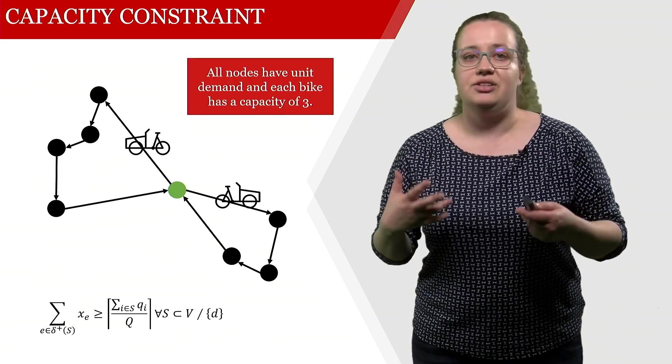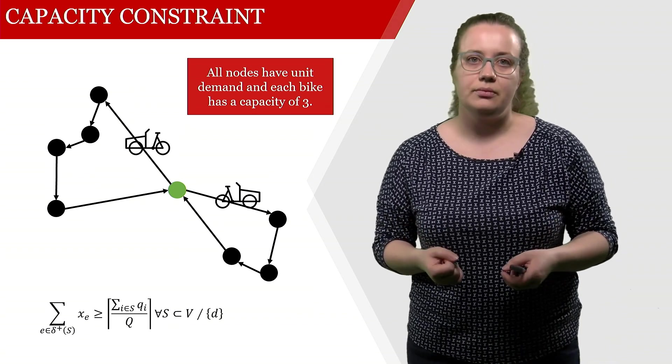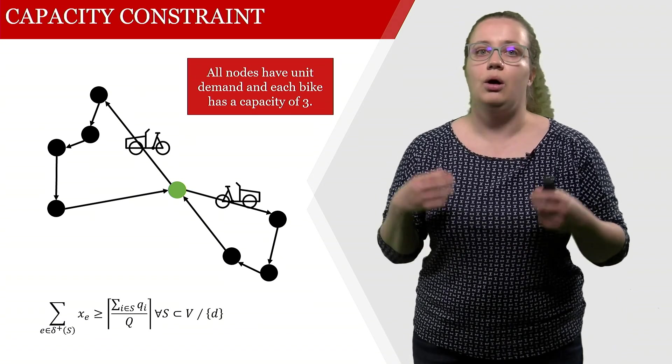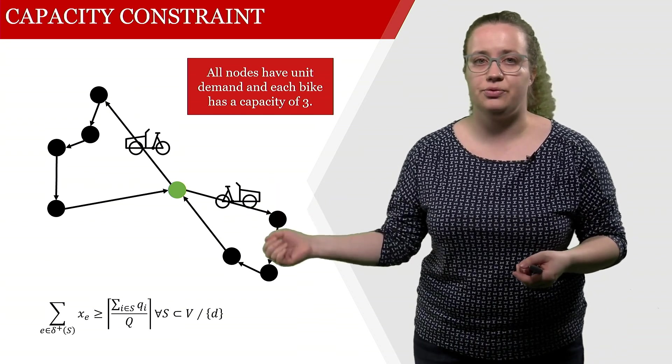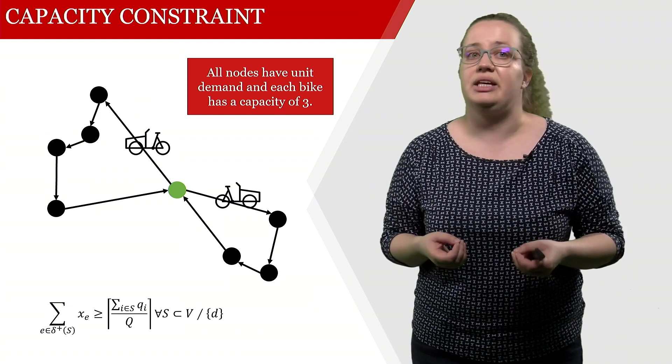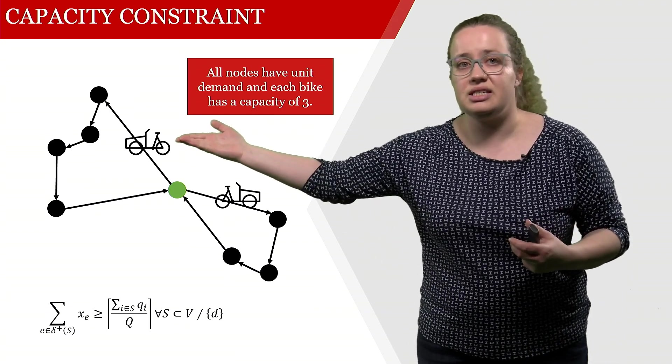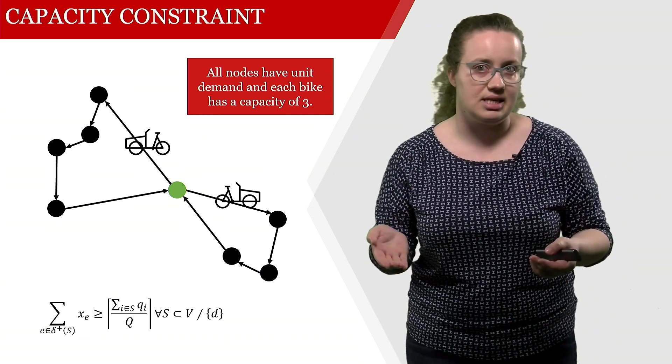Let's just look into different examples for this. In this example, all nodes have a unit demand. This one has a demand of one, has a demand of one, and each bike has a capacity of three. We immediately see that this bike over here exceeds this capacity limit.